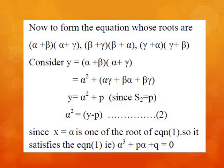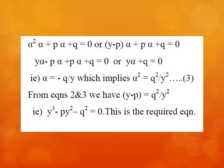Since x = α is one of the roots of equation 1, it must satisfy the equation. Therefore α³ + pα + q = 0, which is rewritten as α²·α + pα + q = 0, or (y − p)·α + pα + q = 0, replacing α² by y − p. This gives yα − pα + pα + q = 0, so yα + q = 0, meaning α = −q/y. Therefore α² = q²/y², which is equation 3.